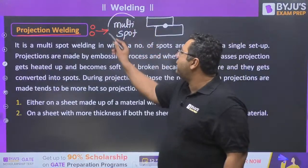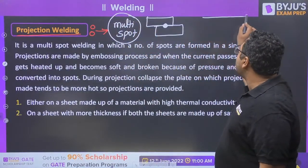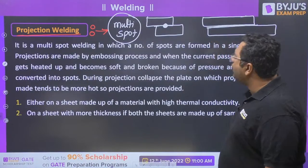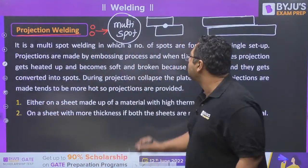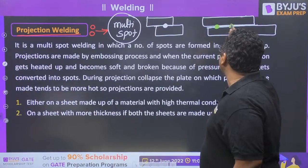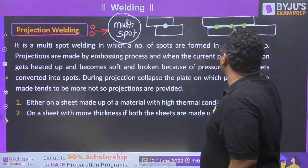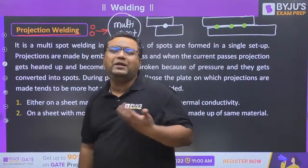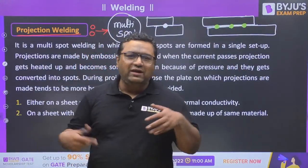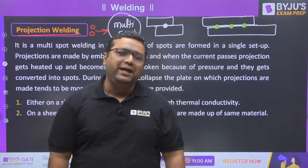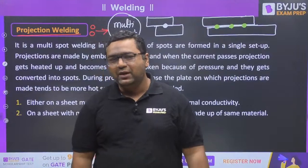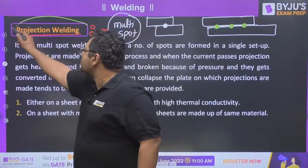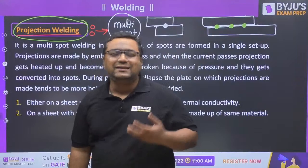When we talk about multi-spot welding, we have two plates that are very large in length. We want multiple spots - say one spot here, one here, and one here. If you want three spots, you can either go for spot welding three times, or you can make these three spots at one time. Making multiple spots at the same time is the essence of projection welding.